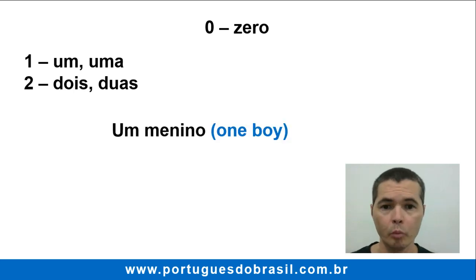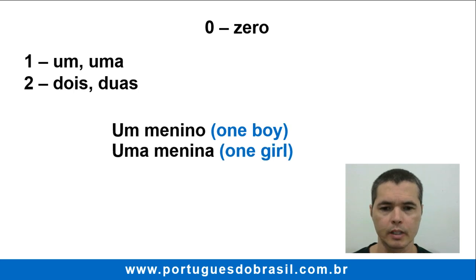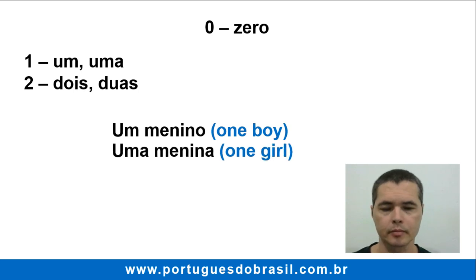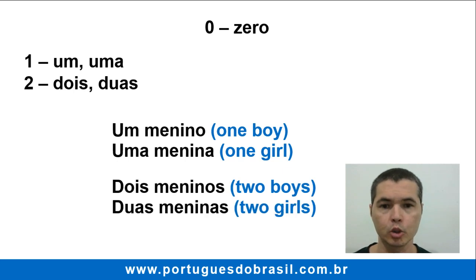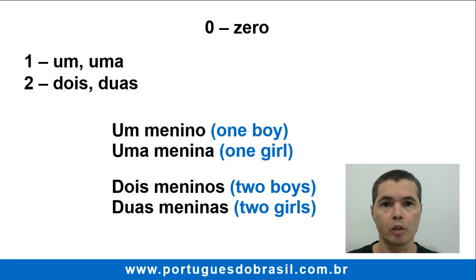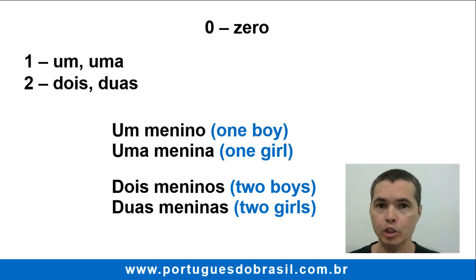Um menino. Uma menina. Dois meninos. Duas meninas. From zero to ten, only one and two have gender.